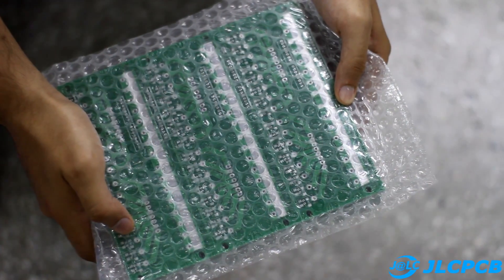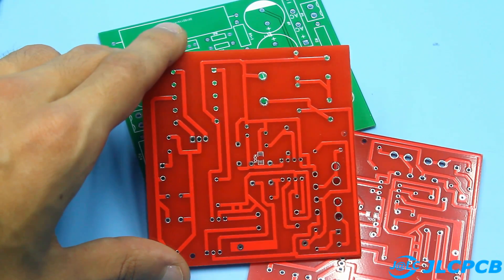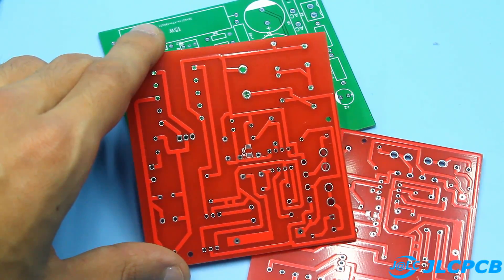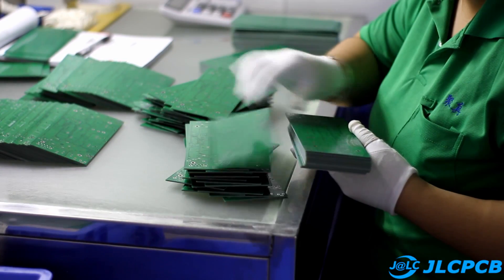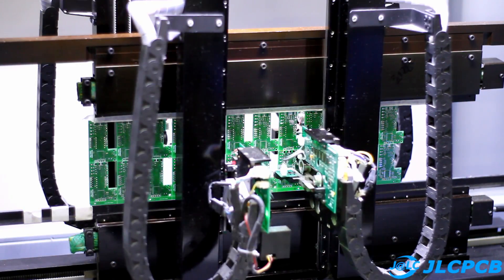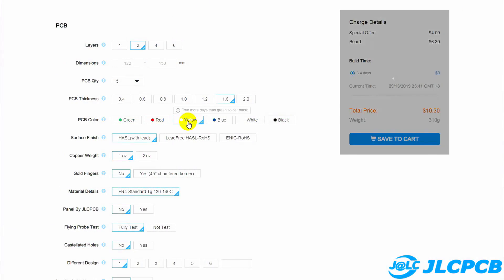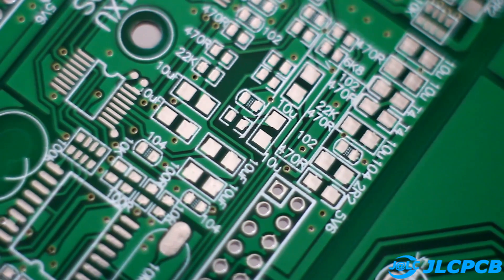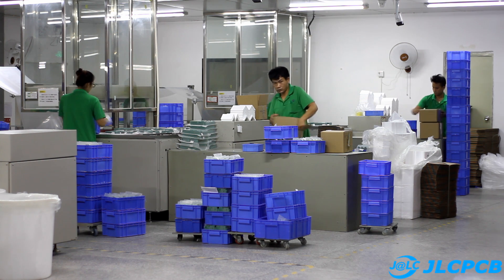But before we start, a few words about the sponsor of this video, about the company GLC, which is one of the leaders in the field of production of printed circuit boards. You can order PCB of any complexity at the lowest prices. The price starts from $2 for 10 pieces. GLC PCB production is back to its normal work. Feel free to order PCB, SMT and Stencil. All links are in the description.